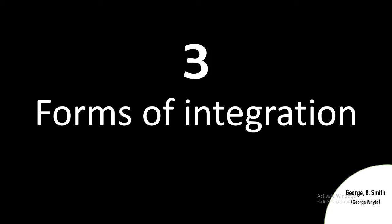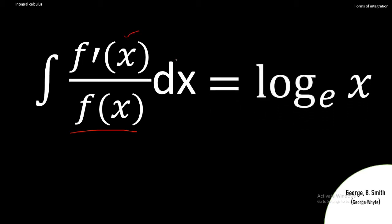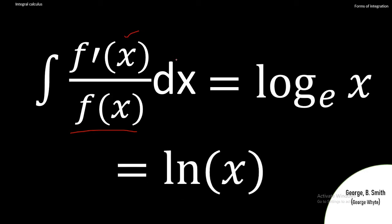Hello guys and welcome back. This is the fourth video in this chapter where we are looking at forms of integration. If you haven't watched the previous videos, go ahead and see them first. In the last video, we treated integration of a fraction — when you differentiate the denominator and get the numerator, the answer is simply the natural log of the denominator, written as ln of the denominator, plus c for the indefinite integral.